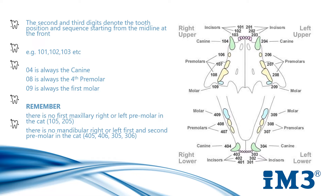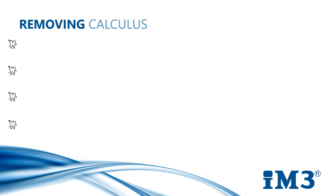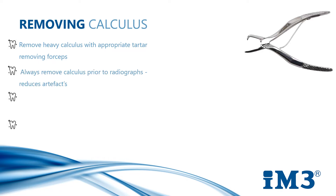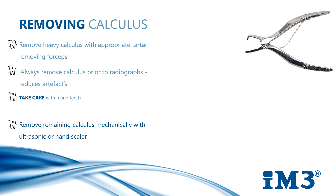In feline patients, we're missing 105 and 205 on the maxilla. On the mandible, we're also missing the right and left first and second premolars — the 05s and 06s — going straight from our canines (04s) to our 07s and premolars. Once we have charted our teeth initially and done our initial count of missing teeth, before proceeding further we need to remove heavy calculus using appropriate tartar-removing forceps. These have a curved beak allowing easy removal of heavy calculus from the tooth root surface before scaling.